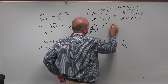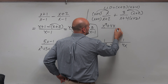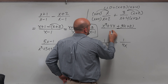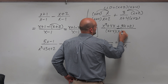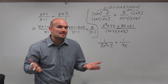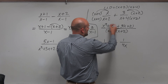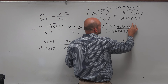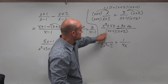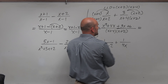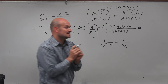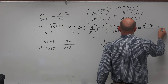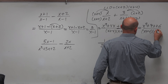Applying the distributive property: the numerator becomes x squared plus 4x, plus 3 times (x plus 2), all over (x plus 4)(x plus 2). Distributing gives 3x plus 6. Now combining like terms in the numerator — adding 4x and 3x — gives a final solution of x squared plus 7x plus 6, all over (x plus 4)(x plus 2).